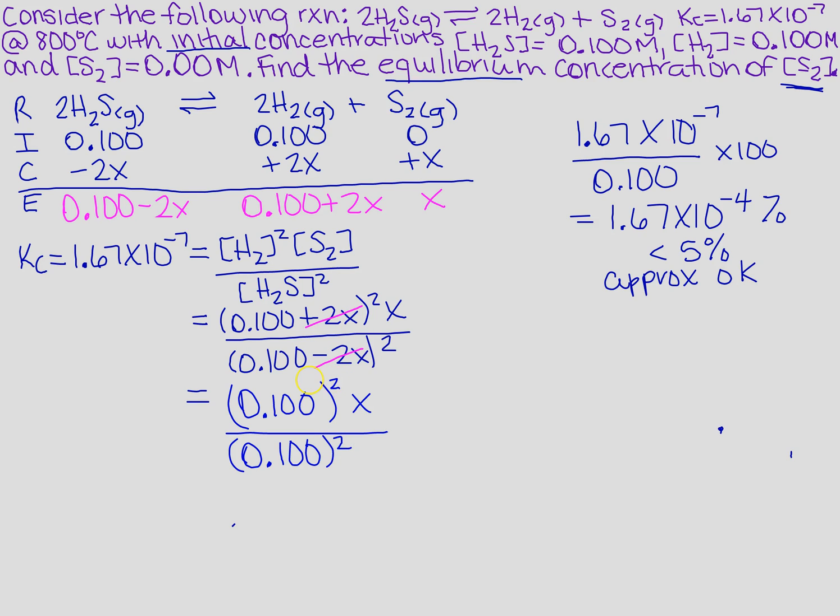So what we have that was really hard turns into simply 0.100 squared times x over 0.100 squared. Oh, well, hey, check that out. The next thing that you notice is what? These two cancel because they're exactly the same. So that means that 1.67 times 10 to the minus 7th is going to equal to x.